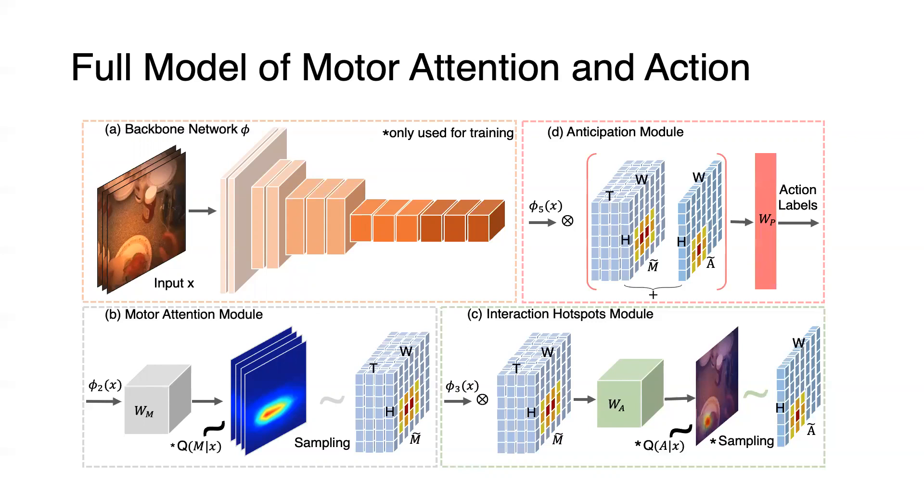Finally, both sampled motor attention and interaction hotspots are used to selectively aggregate important visual features for predicting future human-object interaction.